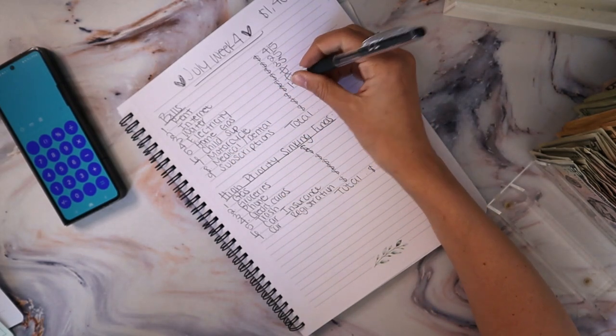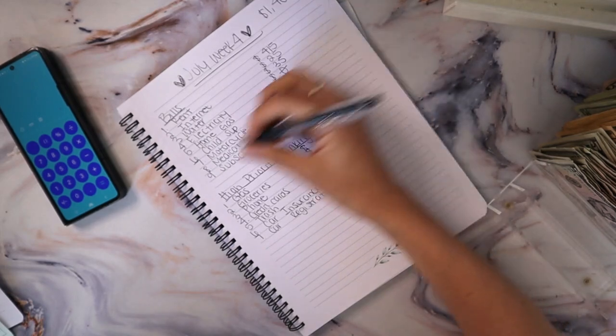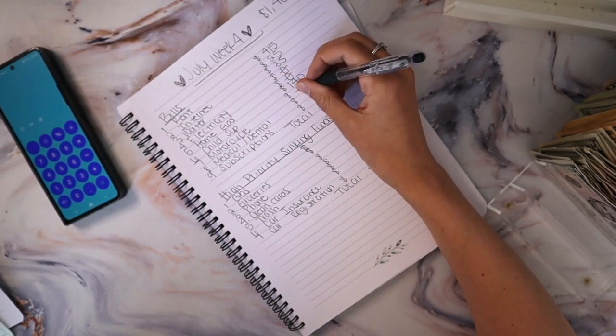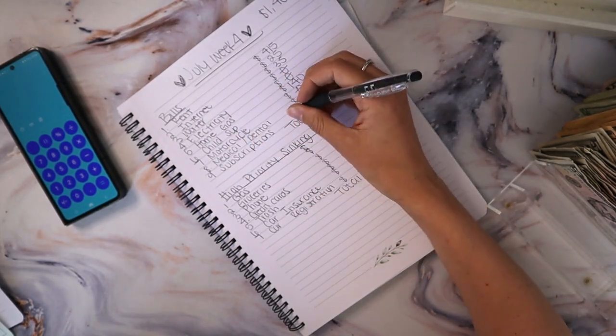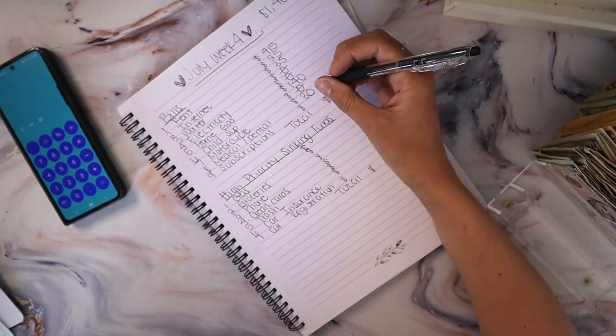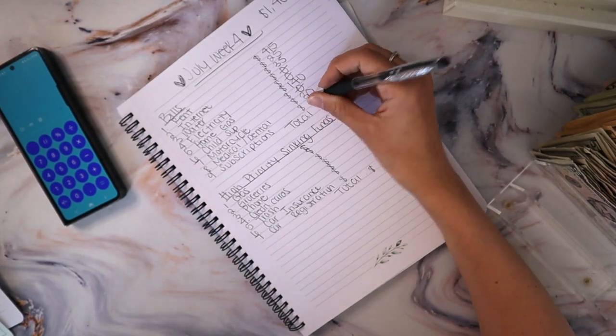Child support gets $140 every single week. Motorcycle also has a pretty good buffer. I'm going to skip that one too. Medical and dental is going to get $30. Subscriptions is going to get $50.